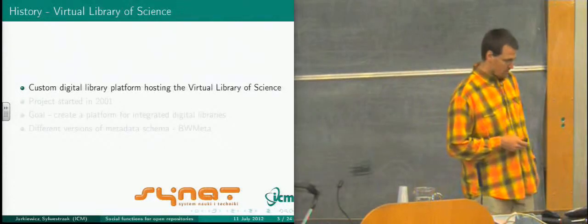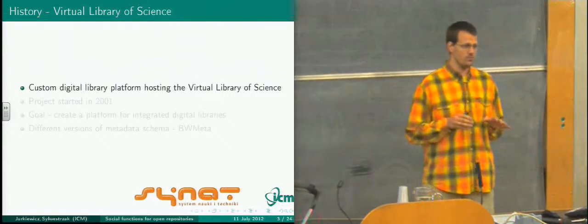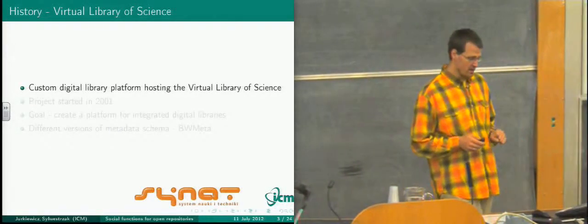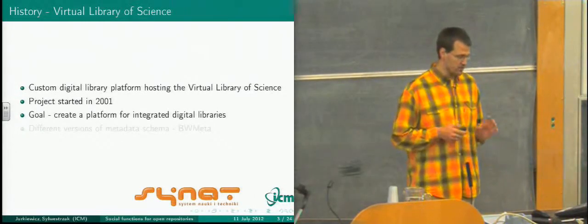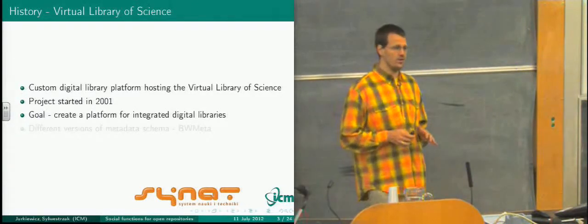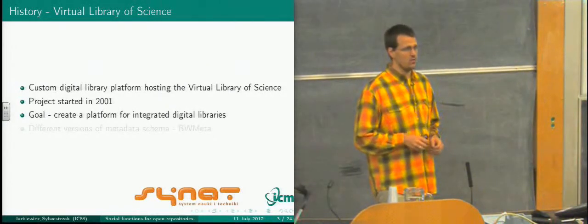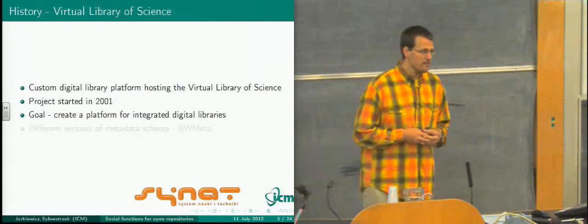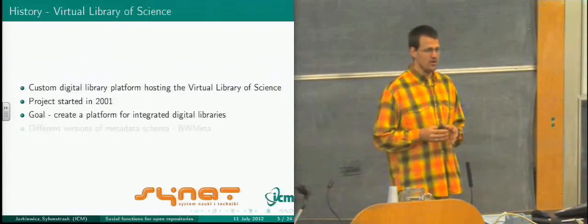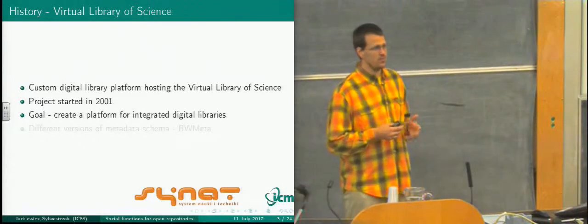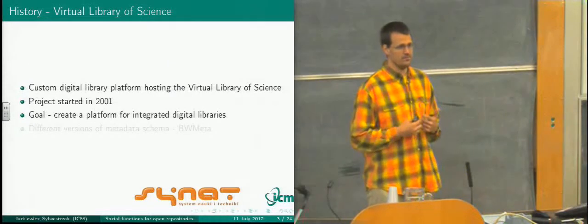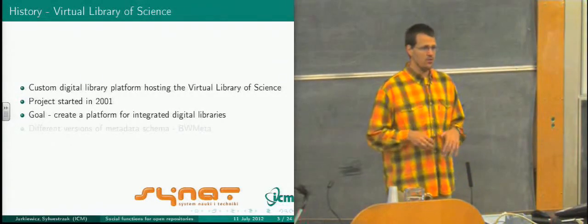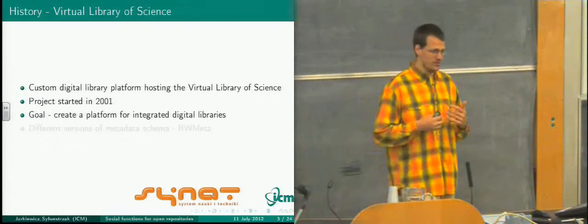At the beginning in ICM, we designed the Virtual Library of Science. It's a custom digital library platform. This project started in 2001. Its goal was to create a platform for integrated digital libraries — meaning we get data from different providers and show them in a unified way, to allow unified search and unified access. This was also caused by licensing, because the Polish government said that when they are buying something from a publisher, they want to keep it on our side, so that if the publisher went bankrupt, it's still in our place and we can use it.